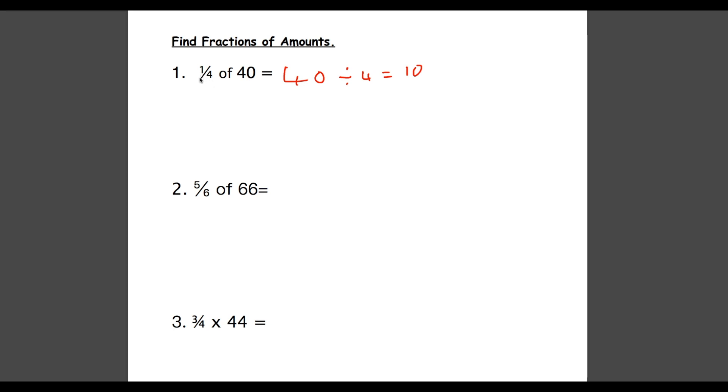And our second step is once we've divided by this bottom number we then need to multiply by the top number, our numerator. Now in this case it is 1. So 10 times 1 is still 10. So our answer is 10.